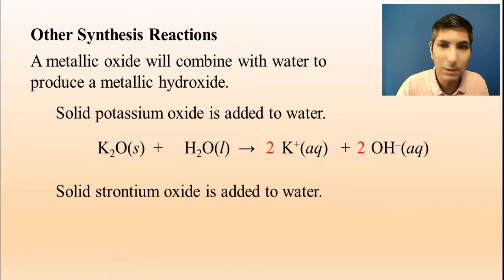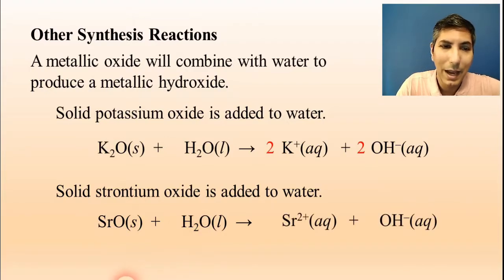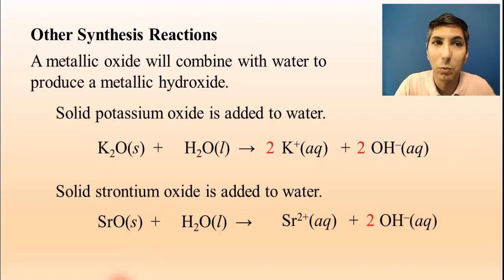Now, the next example here is very similar. This time, we're adding solid strontium oxide to water. The same type of reaction, essentially, except we're essentially just substituting the strontium in place of where the potassium was in the last example. So strontium oxide is SrO, and then water is H2O. Once again, the product of this metallic oxide being added to water is going to be the metallic hydroxide. In this case, that's strontium ions and hydroxide ions. And don't forget to balance that equation. So that's one type of synthesis reaction that you need to be aware of.